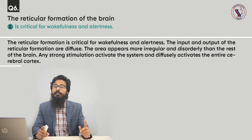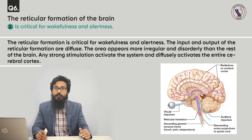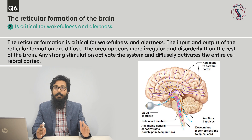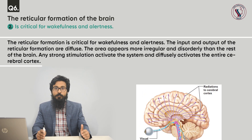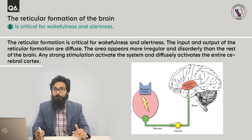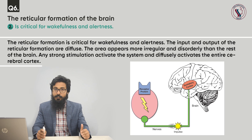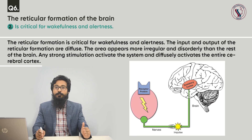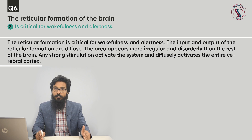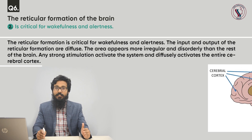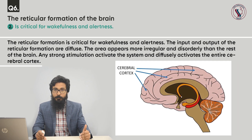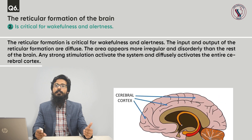The reticular formation is critical for wakefulness and alertness. We can say the reticular formation is a kind of relay system. When it gets information from other parts of the body, it decides and distributes that information to different parts of the cortex. When there is more stimulation in the reticular formation, the individual can feel wakefulness. With less activation, less activity in the reticular formation is associated with sleepiness.